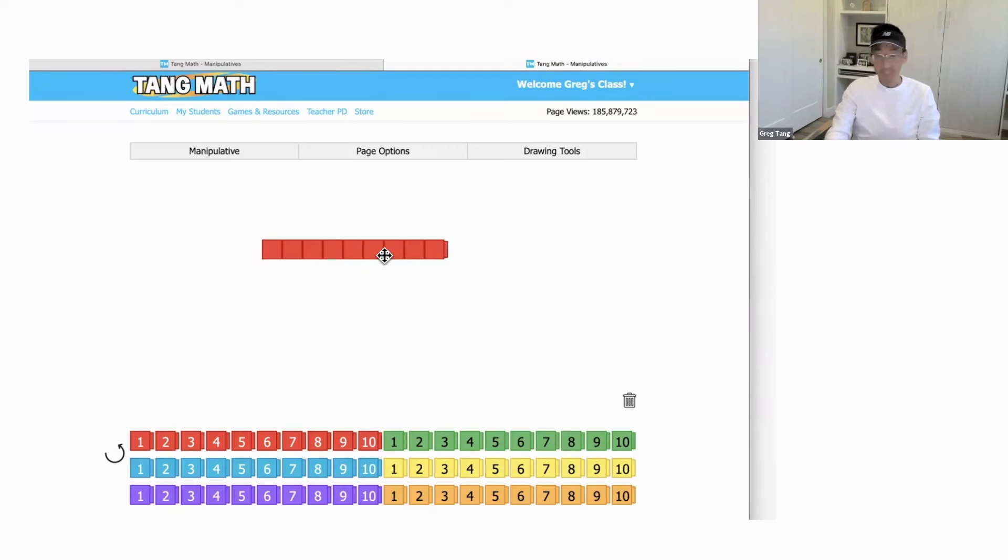When I did it like this, you can't subitize nine as a human reliably. You can't. It's not a human trait. Now, if I had put nine cubes all random on the page, would you have known it's nine? Absolutely not.